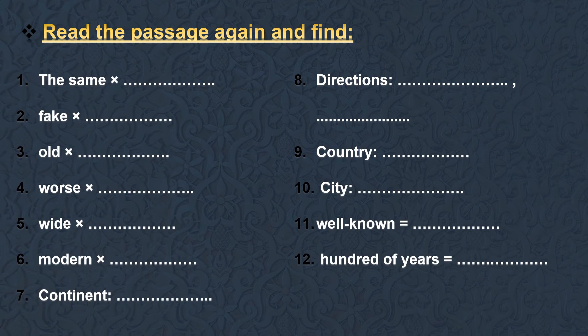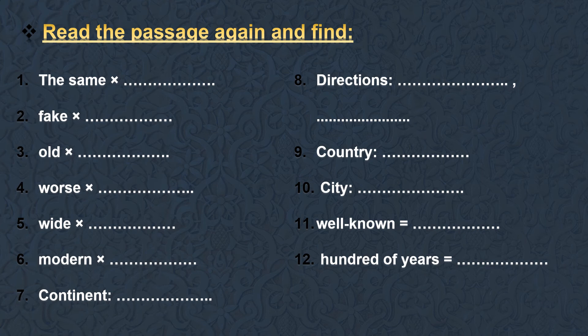Instead of activities two and three, try to read the passage again and find these 12 questions. Find in the text the opposite of: the same, fake, old, worse, wide, and modern. You can also find a continent, two directions, a country, and a city. Find a synonym for well-known and hundreds of years. Pause the video, do the task, then check your answers. The same — opposite is different. Fake — real. Old — new. Worse — better. Wide — narrow.